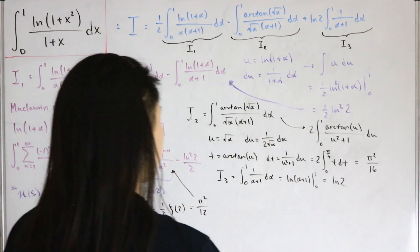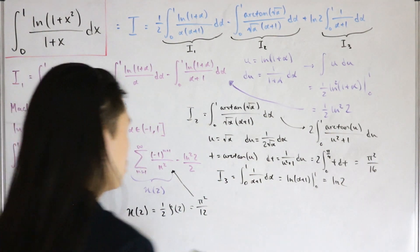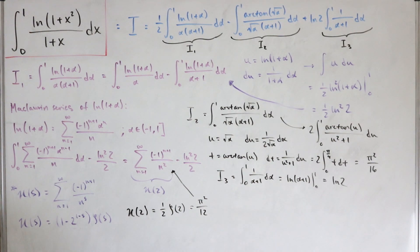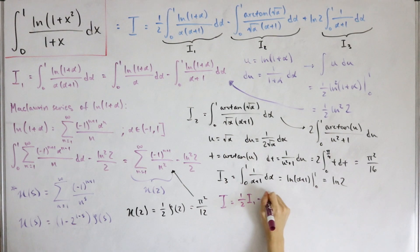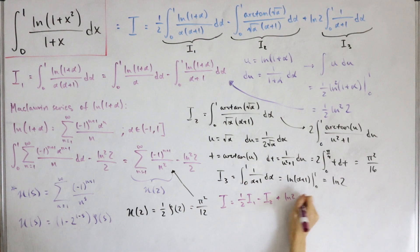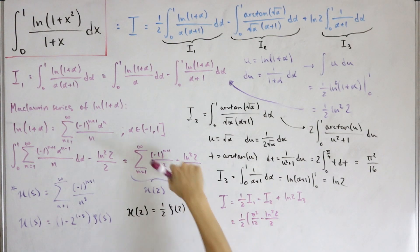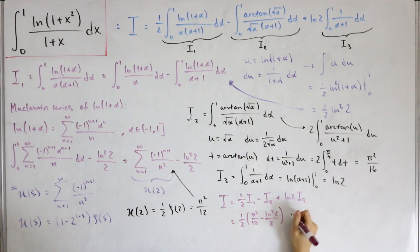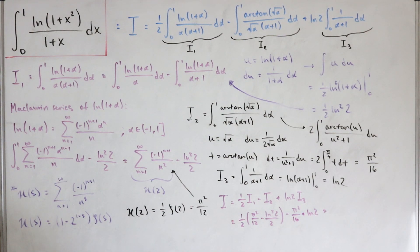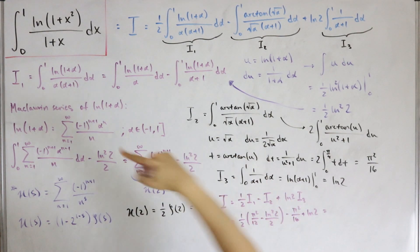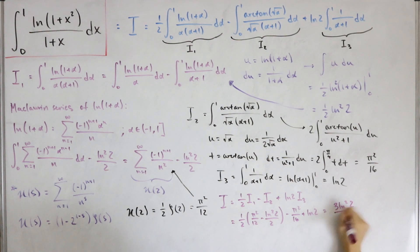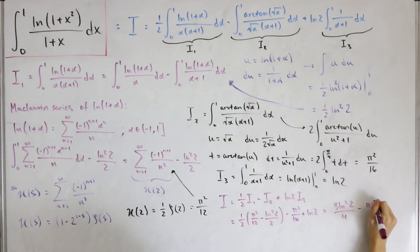Now we substitute everything back: I = (1/2)·I₁ − I₂ + ln(2)·I₃. Plugging in: (1/2)·(π²/12 − ln²(2)/2) − π²/16 + ln(2)·ln(2). After simplification, the final answer is I = (3·ln²(2))/4 − π²/48.